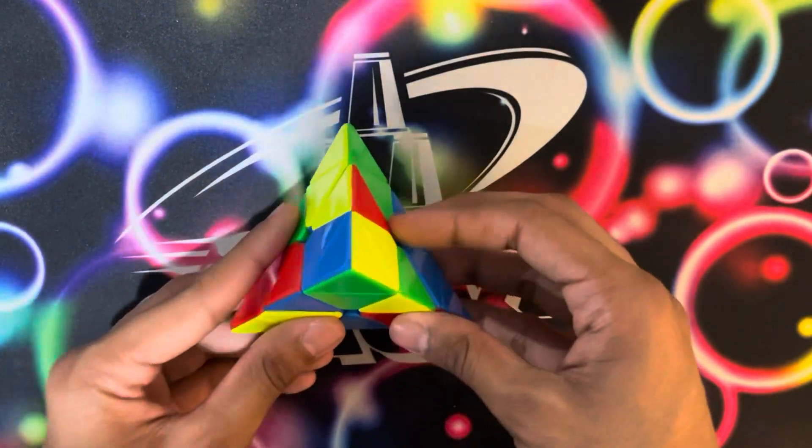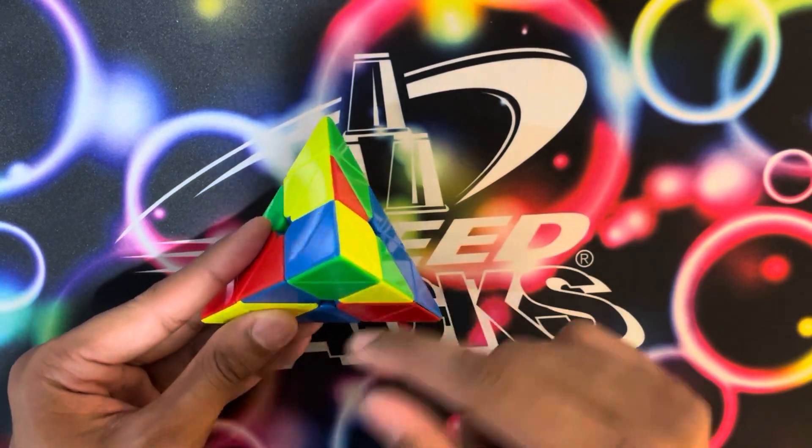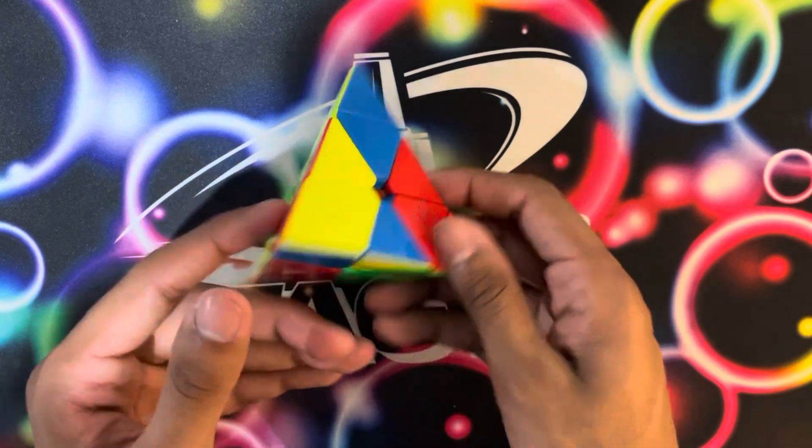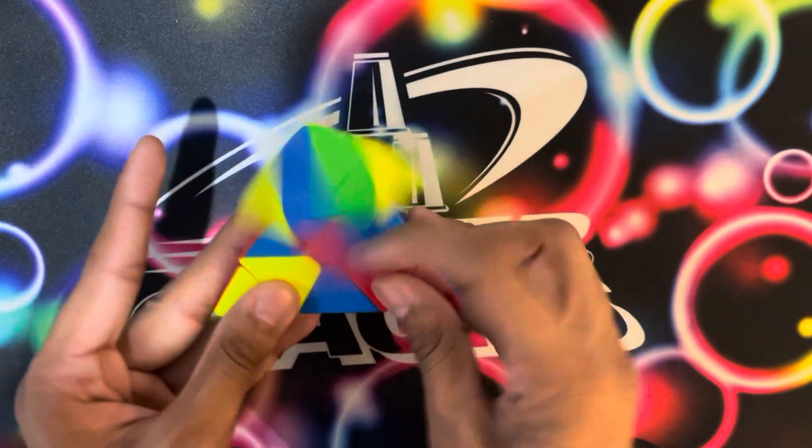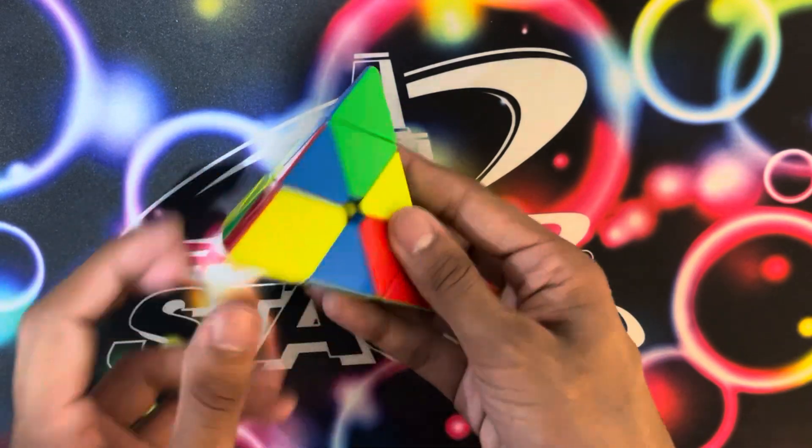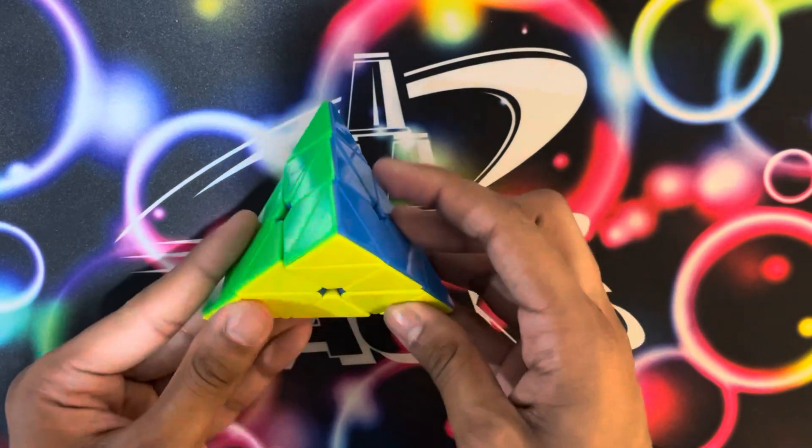On the scramble, Chris does red. He starts off by pairing up the red-yellow edge and the red-blue edge in one move with their centers, like that. And you can just go ahead and solve them. And if you see here, that also solves a layer. And then he just did two flips like that.